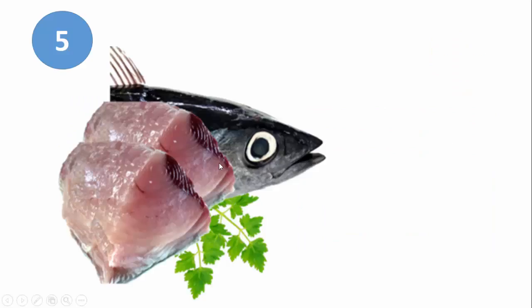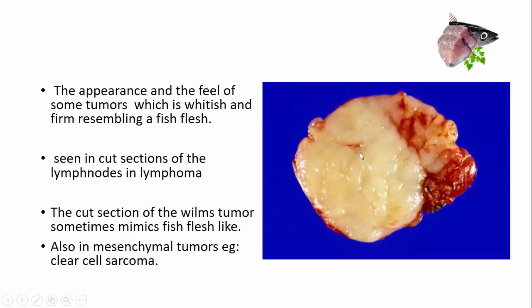The fifth one is fish flesh. The appearance and feel of some tumors — whitish and firm — resembles fish flesh. This is most commonly seen in the cut section of lymph nodes in lymphomas. The cut section of Wilms tumor and some mesenchymal tumors like clear cell carcinoma can also look like fish flesh.